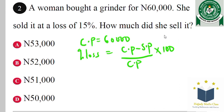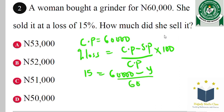Our percentage loss is 15%, which equals the cost price — 60,000 Naira — minus the selling price (let our selling price be Y), all over the cost price, which is 60,000, multiplied by 100 over 1.